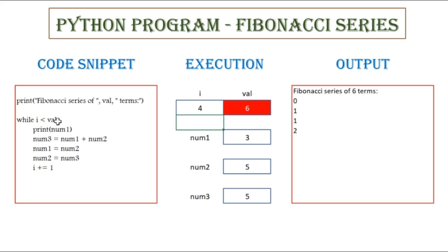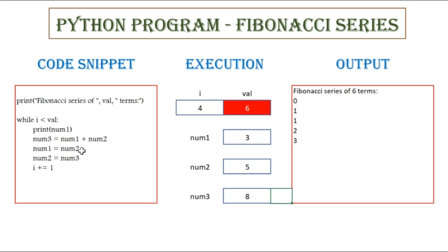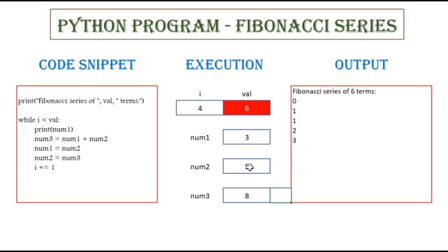While 4 less than 6 — that is true. So I am printing the value of num1, which is 3. So 3 gets printed in the output window. Num3 equals num1 plus num2, so 3 plus 5, which will be 8. Num1 equals num2, value in num2 is 5, so num1 is going to be 5 now. Num2 equals num3, the value of num3 is 8, so num2 is also going to be 8. i is incremented by 1, so now i becomes 5.